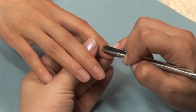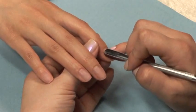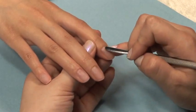Begin your prepping by pushing back the skin surrounding the nail. Using your pusher, remove any and all cuticle from the nail plate.